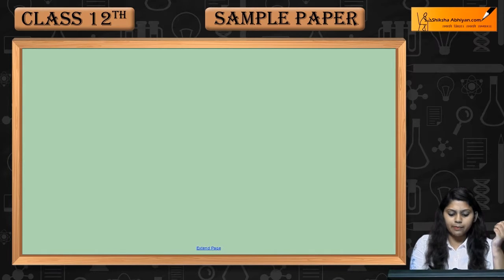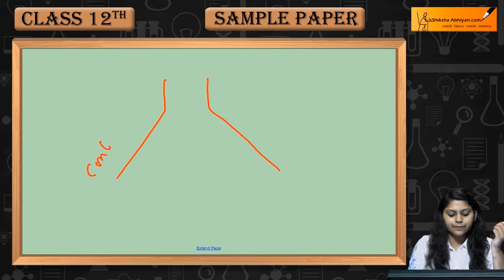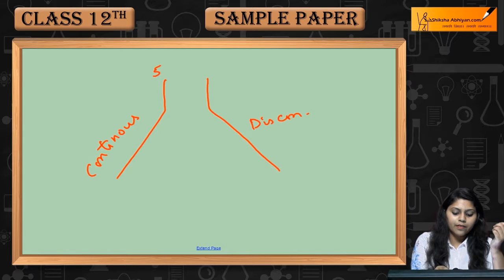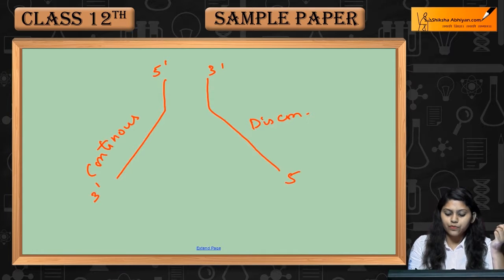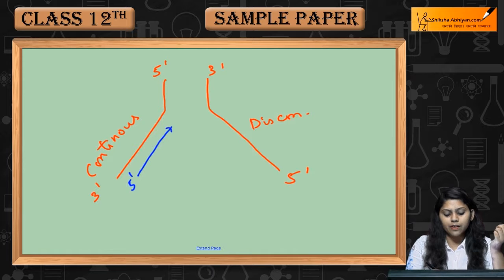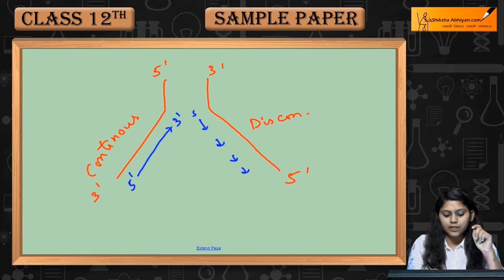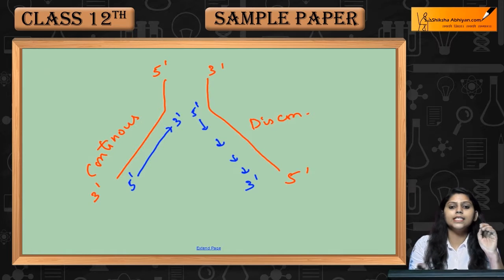सबसे पहले, replicating fork. यह एक continuous strand है और this is the discontinuous strand. 5' to 3', 3' to 5'. Continuous strand में continuous बनेगा — 5' to 3'. Discontinuous strand में discontinuity में बनेगा — this is 5' to 3'. Okazaki fragments बनेंगे. This is the replicating fork.